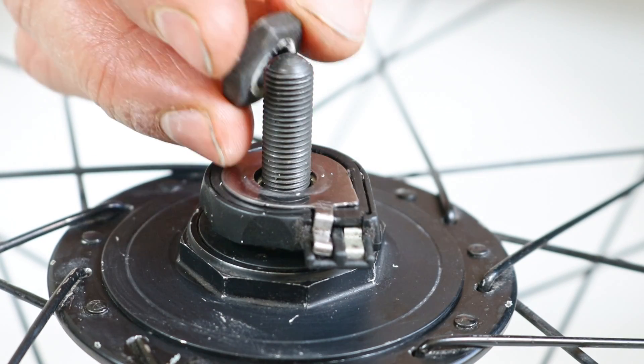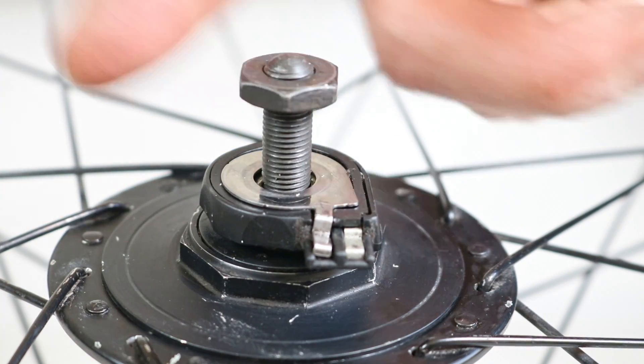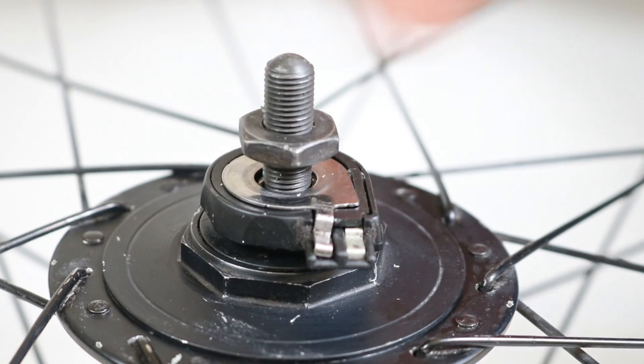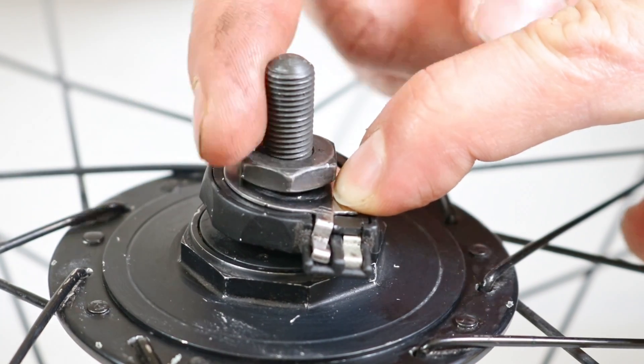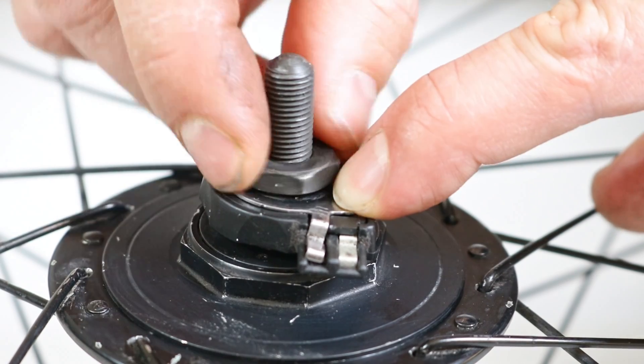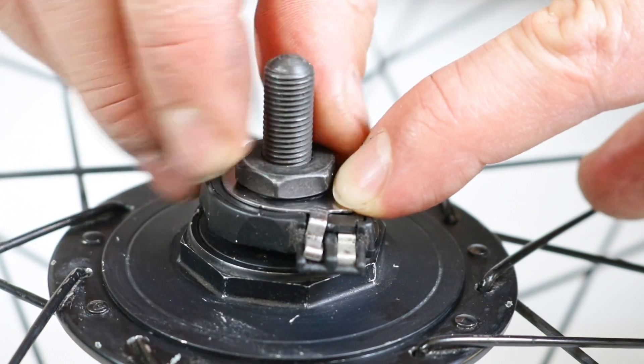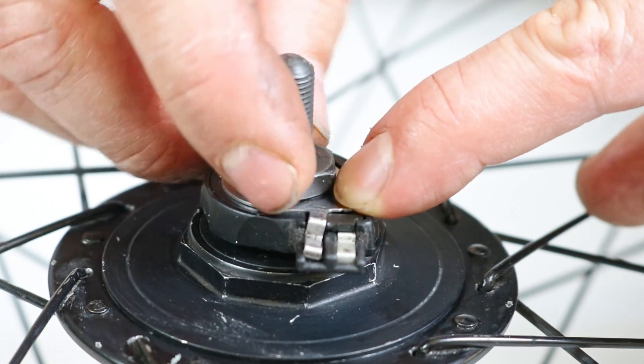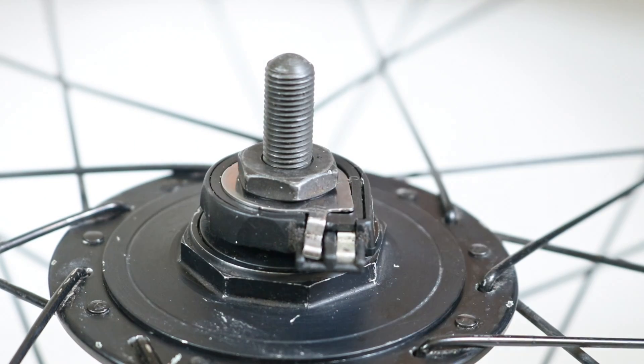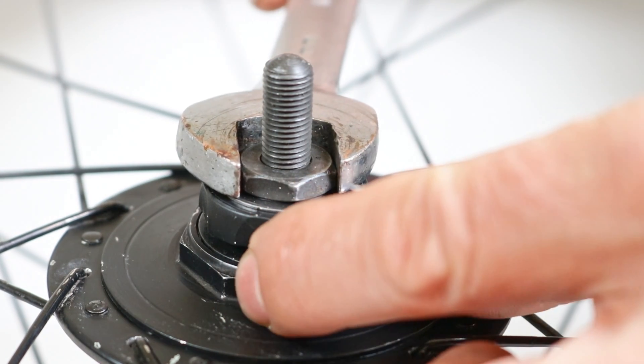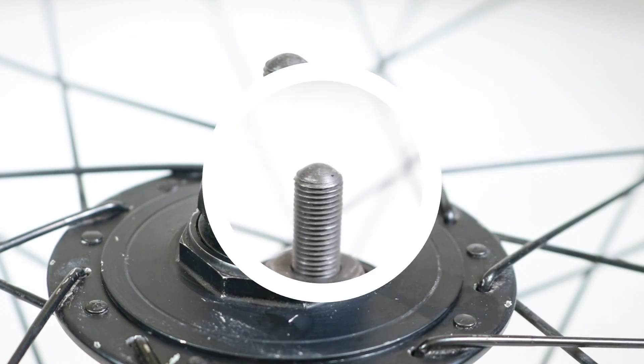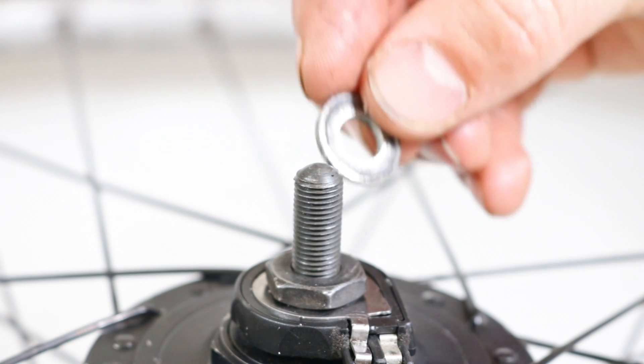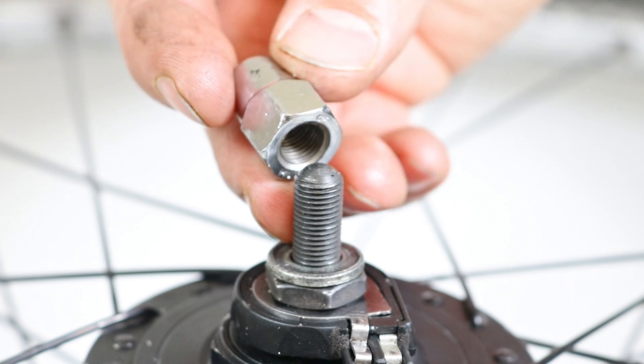Screw the lock nut onto the axle clockwise until it reaches the terminal. You may find it helpful to use your other hand to secure the frame connection terminal plate in position. While holding the terminal, tighten the lock nut with a 17mm spanner. Put back the washer and the wheel nut.